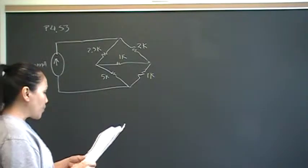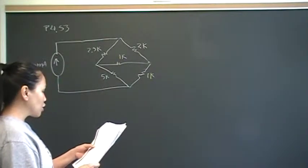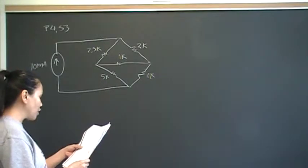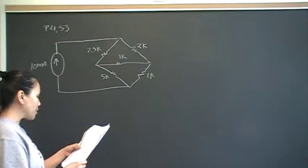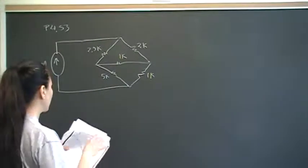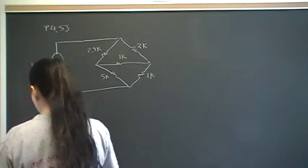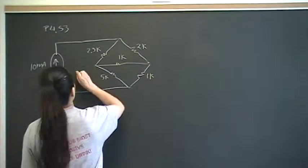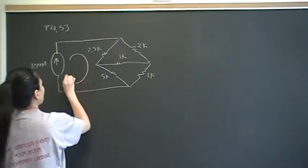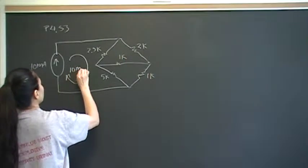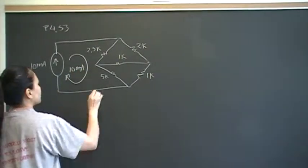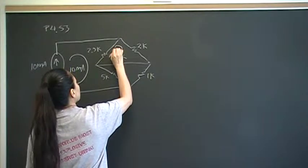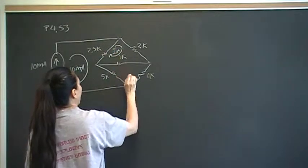For part B, it says use your recommended method of analysis to find the total power dissipated in the 1k resistor. So let's go ahead and do that. This one we know is 10 milliamps — they gave that to us. This one is some unknown I sub A.